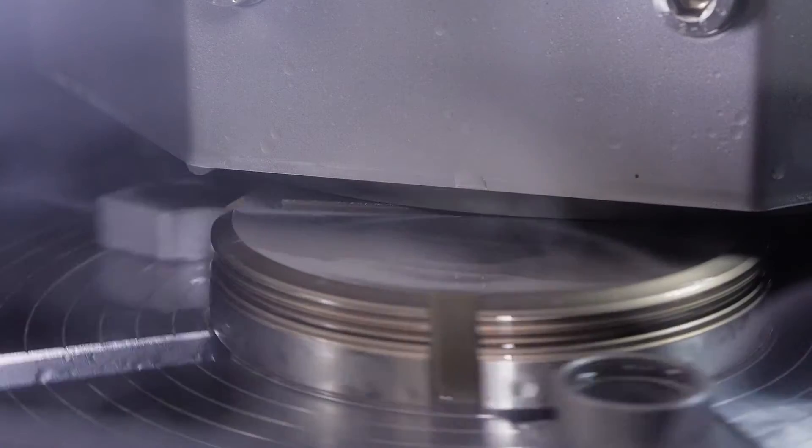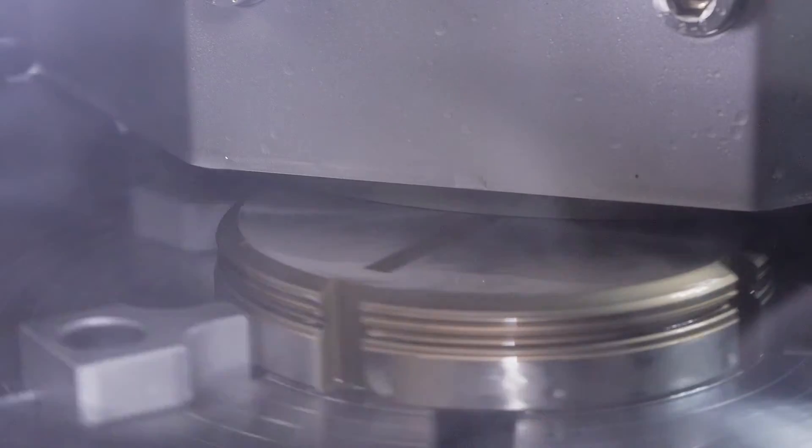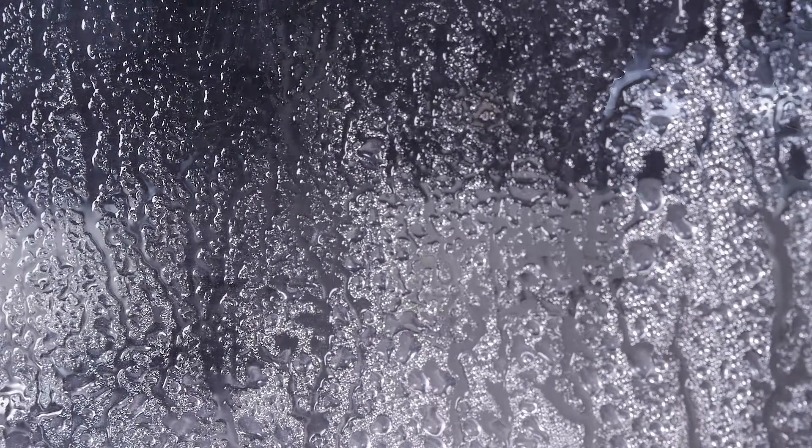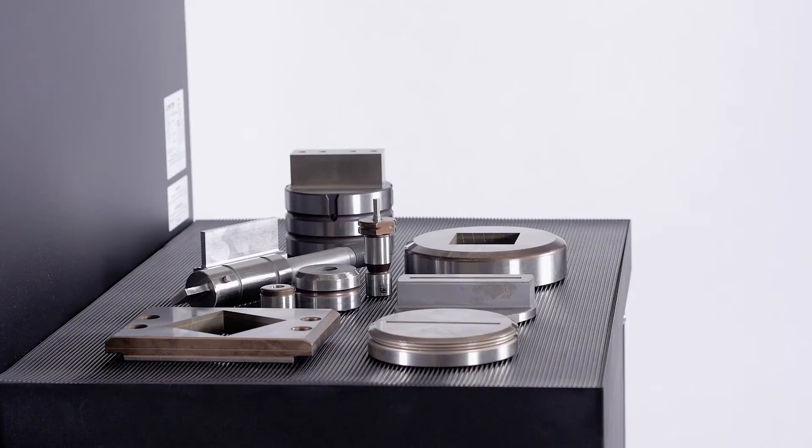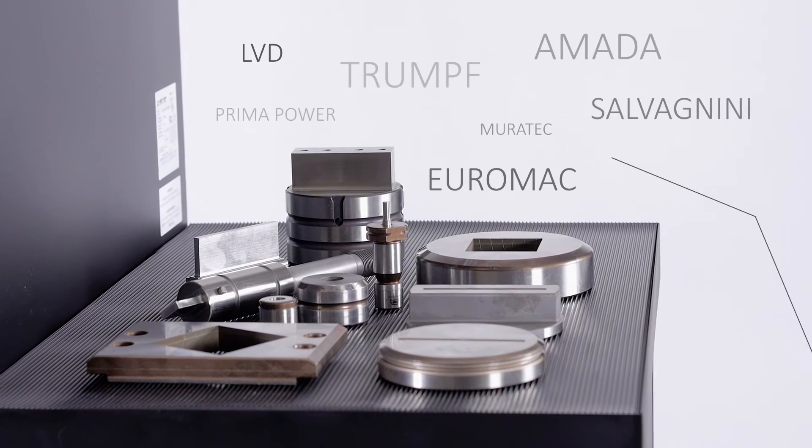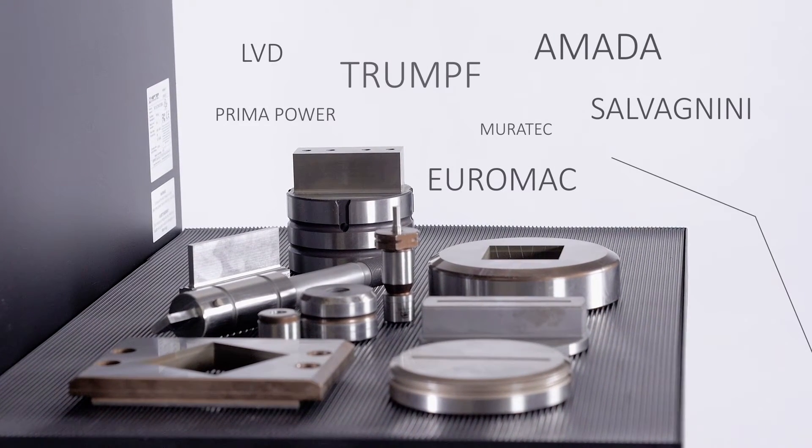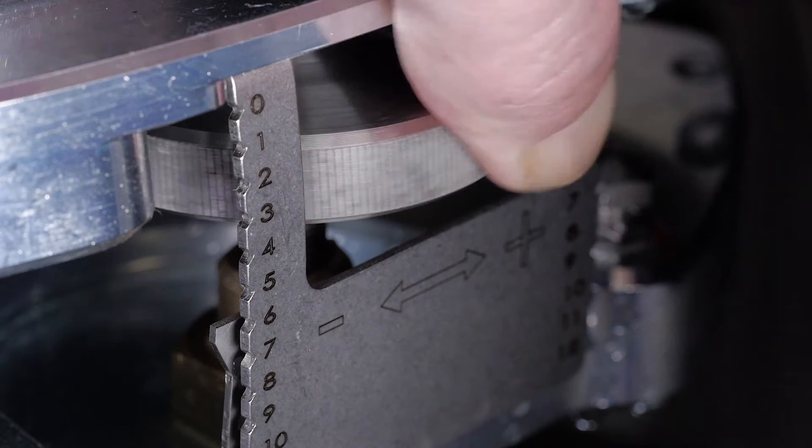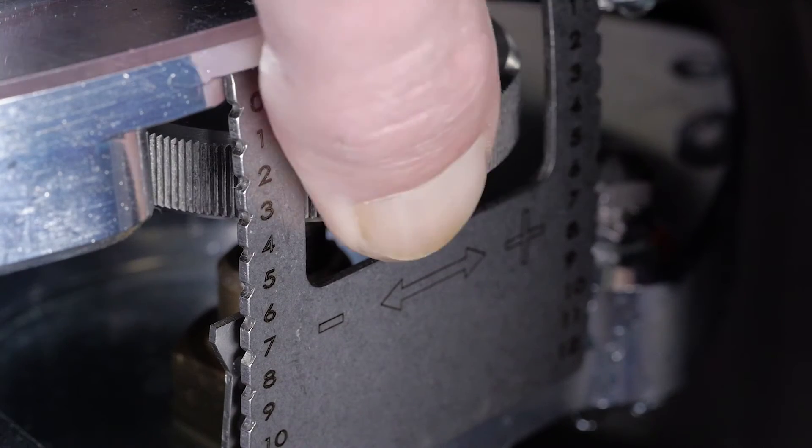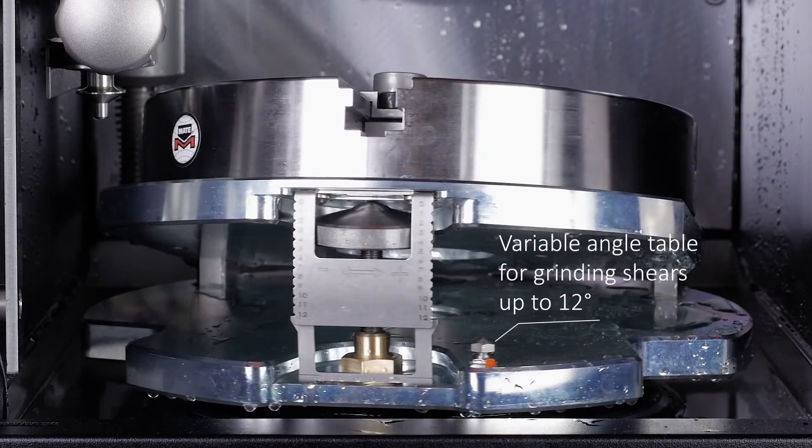That's it. Now the grinding process starts automatically. The operator can leave the Premia unsupervised during this operation. You can precisely grind all makes of punch press tools and dies. The angle table can be adjusted infinitely variable up to 12 degrees for rooftop tools and whisper shears.